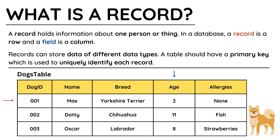A record should also contain a primary key, which allows each record to be uniquely identified. In my example, the primary key is dog ID, just in case there are two dogs called Dottie, both of whom are chihuahuas, both are 11, and both are allergic to fish. Then the dog ID will separate them so they can be uniquely identified.